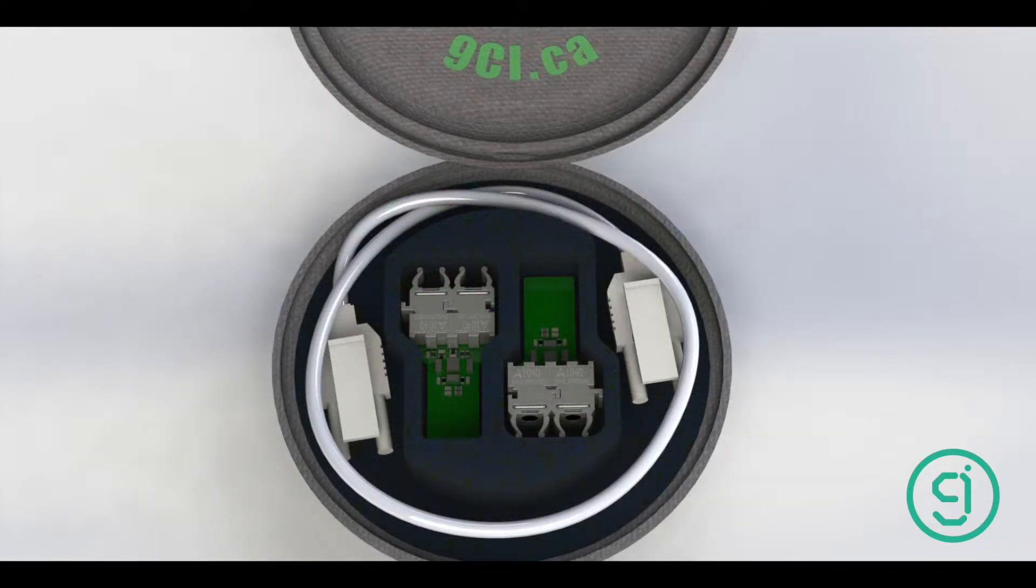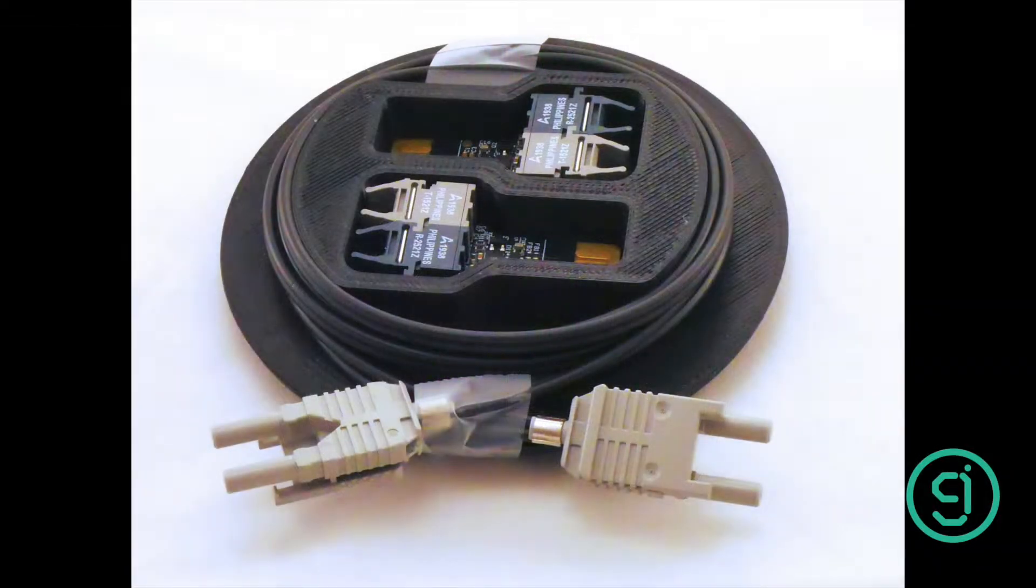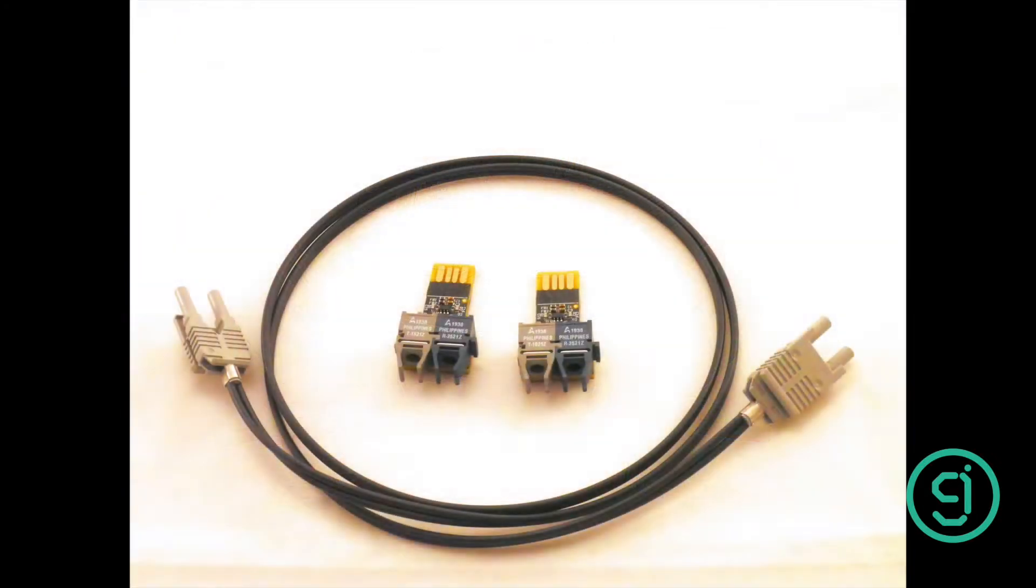USB Fiber can be used for galvanic isolation of two devices, useful for systems like electric vehicles, can be used for long serial links where USB or RS-232 will not work, and can be used when higher speeds in electrically noisy environments are required.